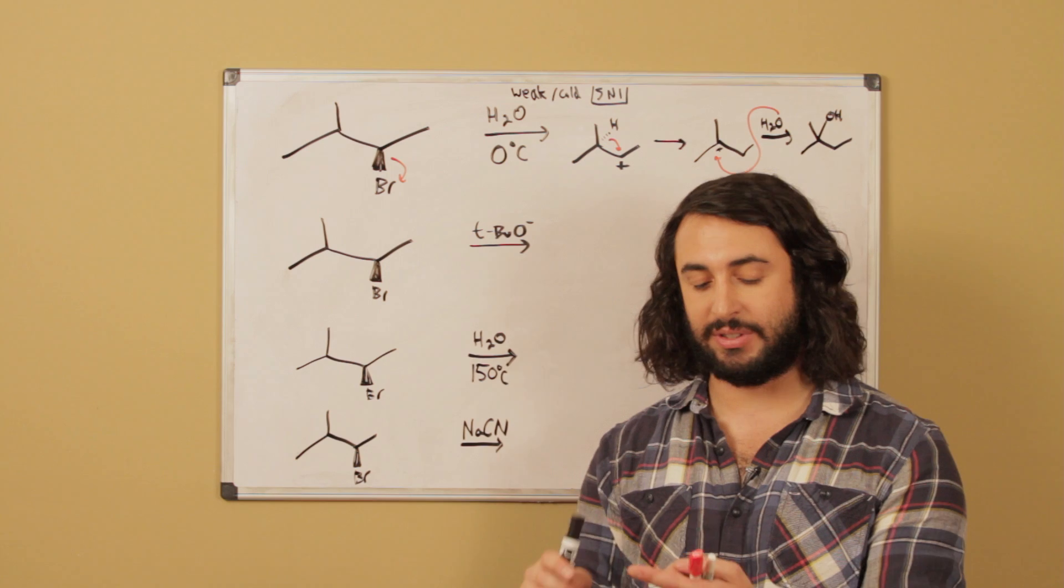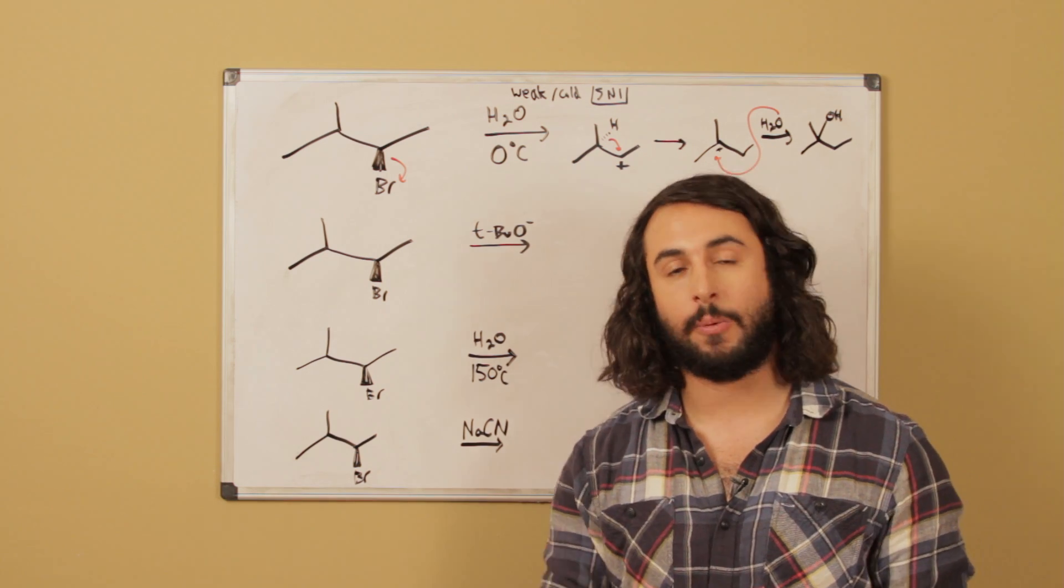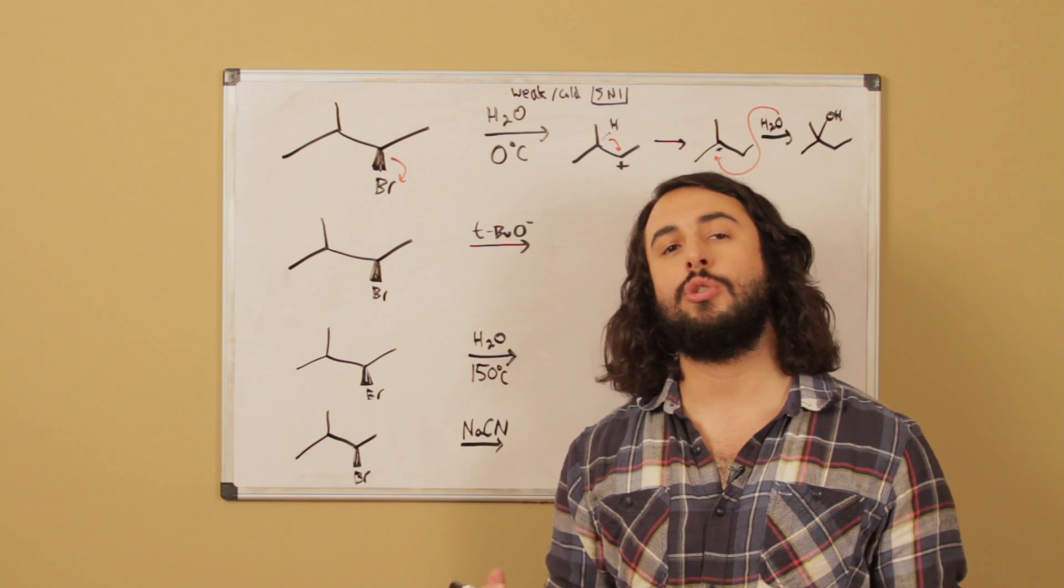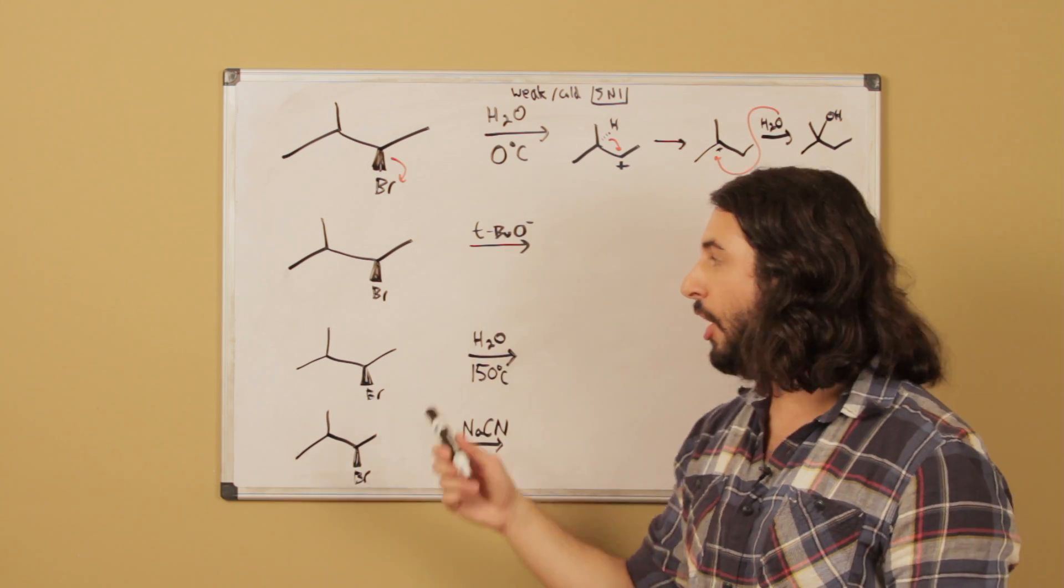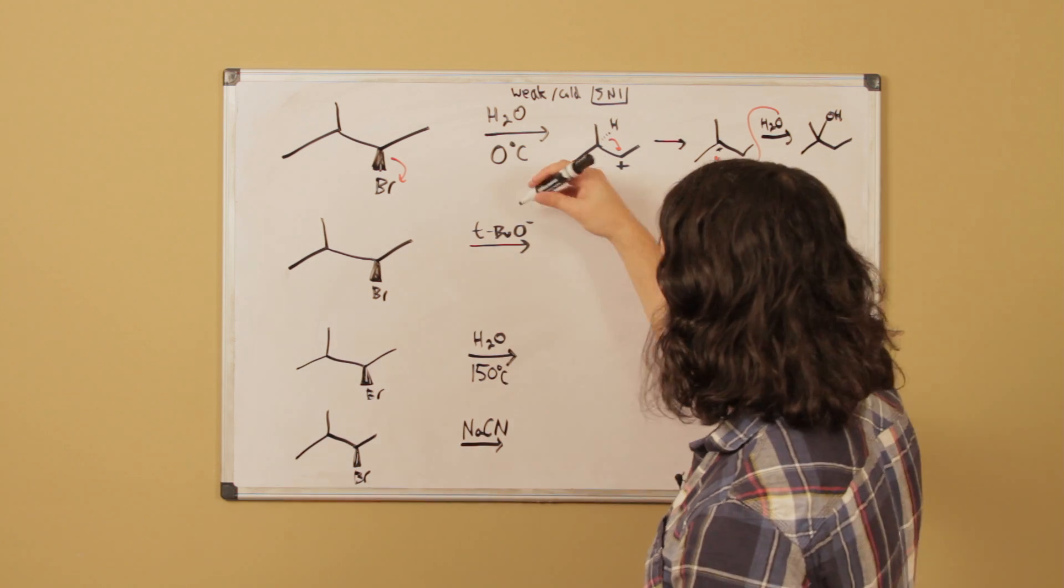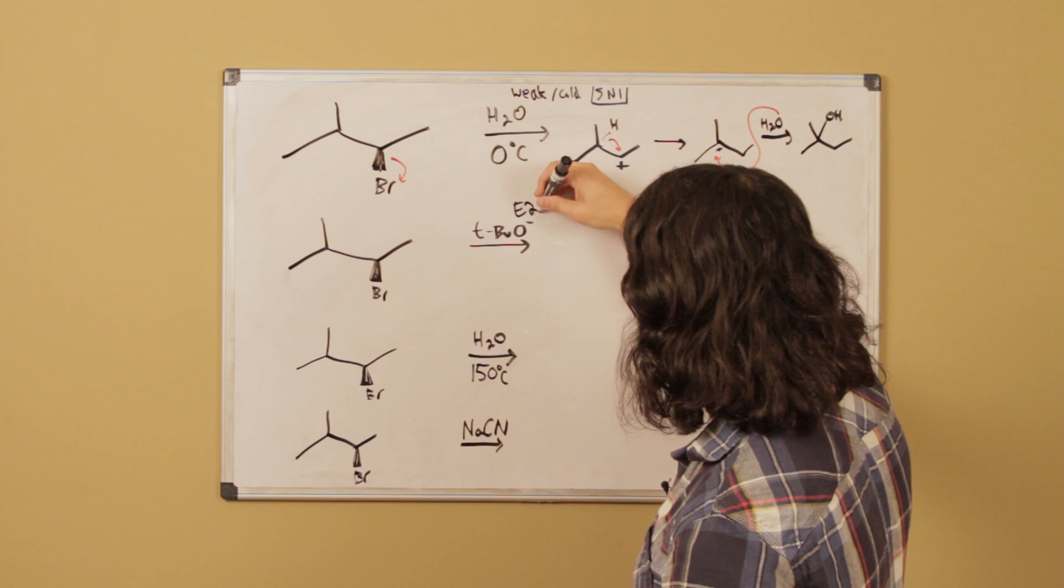It doesn't have to wait for a carbocation so it's either going to do E2 or SN2. But because of how bulky that tert-butyl group is, there's too much steric hindrance associated with this molecule going ahead and coordinating or doing SN2. So we know that tert-butoxide is always going to do E2.